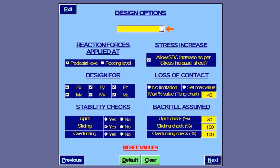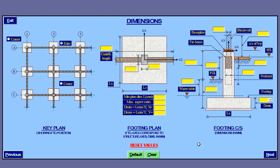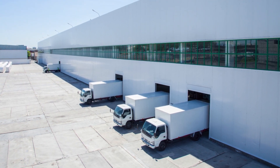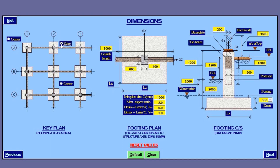Let us select the design code as IS456. This takes us to our next input page. We start with default input. Our footing for the pipe rack column is an edge footing. Selection of the correct column location is important, especially for buildings with elevated floors such as warehouses, where soil overburden varies greatly with location. It is worth mentioning that the axes shown for the footing are structure global axes. We do not have any plinth beam, so we leave this blank. Pedestal projection is 300, plinth height is 0, water table depth is 1 meter below ground, footing depth is 2000, and minimum footing thickness is 300.